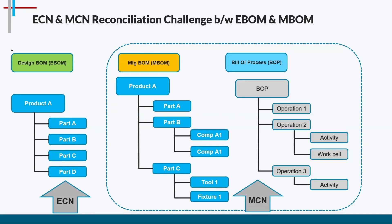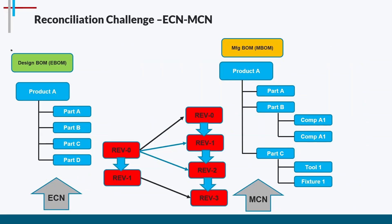Another collaboration challenge is the engineering change notice (ECN) and manufacturing change notice (MCN) reconciliation between eBOM and mBOM. ECN happens on the eBOM side, and MCN happens on the mBOM and BOP side. For example, in the eBOM we may have revision 1 and revision 2, while in the mBOM we have revisions 0, 1, 2, and 3 — where eBOM revision 0 derives mBOM revisions 0, 1, and 2, and eBOM revision 1 derives mBOM revision 3.